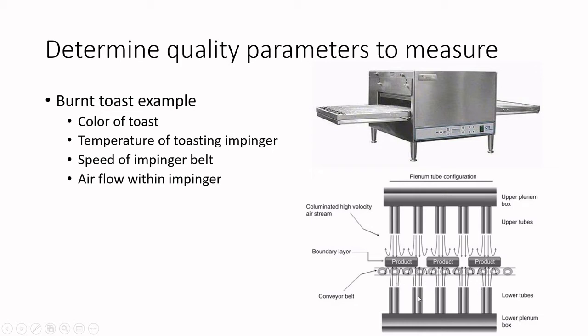Maybe the lower tubes are getting jammed up with toast crumbs, or the plenum tubes have been impeded by product that has fallen into the plenum box below. You need to be evaluating not just the color of the toast but these other parameters as well. We need to really think fundamentally about how the process works and how the equipment works, to know that we're measuring the right thing.